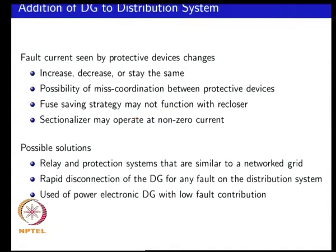One possibility to address the issue of miscoordination between protective devices is to upgrade your protective devices from the simple time overcurrent type of characteristics to something more complex — like what is being used in transmission systems or meshed networks — where you can have multiple sources and try to protect sections of the network using directional relays, distance relays, etc. That would be one possibility, but it drastically increases the cost, which may not be acceptable for a distribution system.